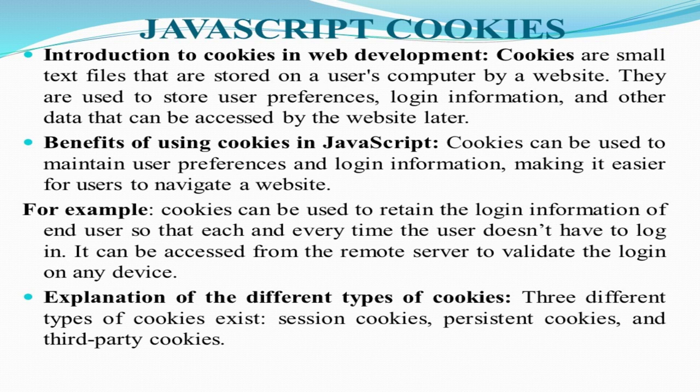Now what is the explanation of the different types of cookies? There are three different types of cookies which exist. The first one is the session cookie, the second one is the persistent cookie, and the third one is the third-party cookie.